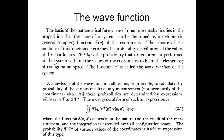The way measurements are performed in quantum mechanics is through a bilinear expression, bilinear in terms of psi and its complex conjugate psi star. The most general bilinear expression is the formula shown here, where the function phi depends on the two spatial coordinates. In practice, the function phi depends on the nature of the problem at hand or on the nature of the measurements we want to perform.